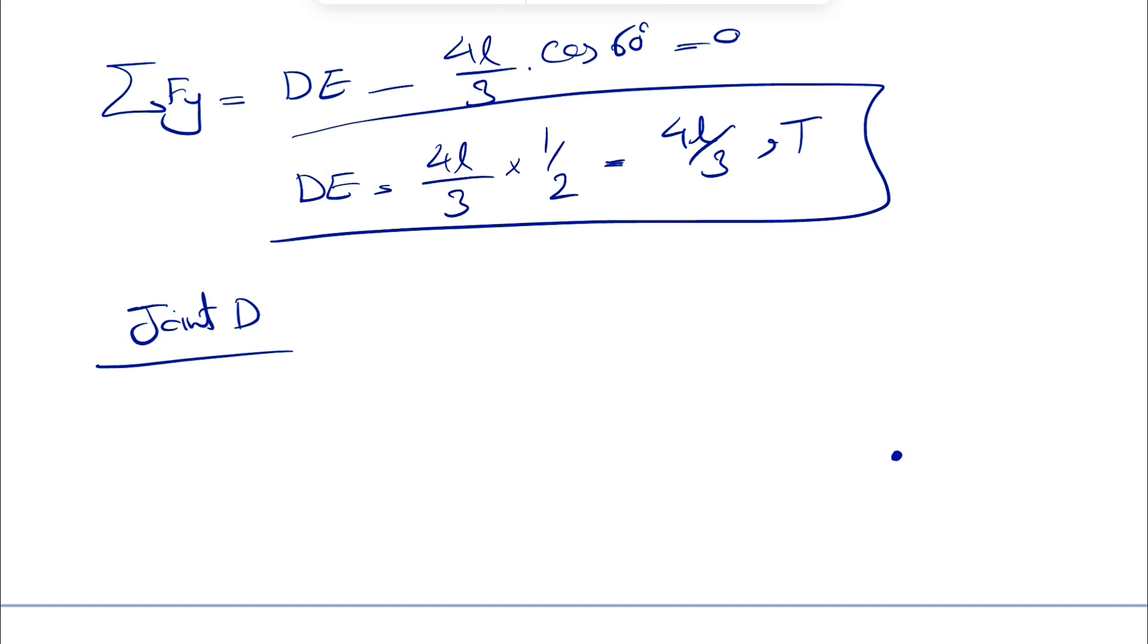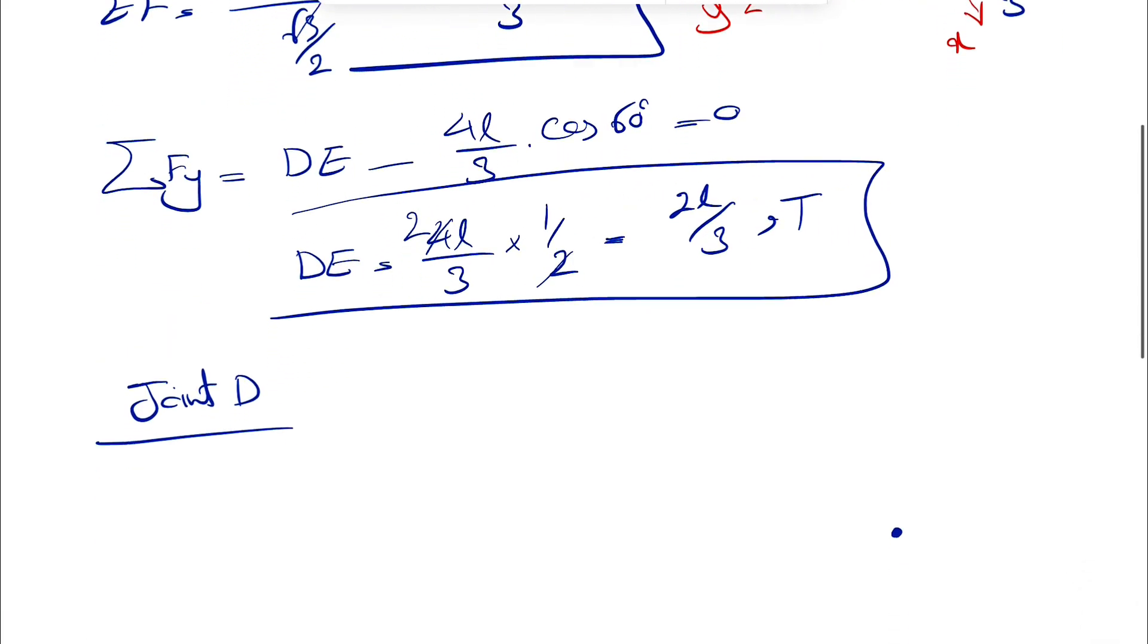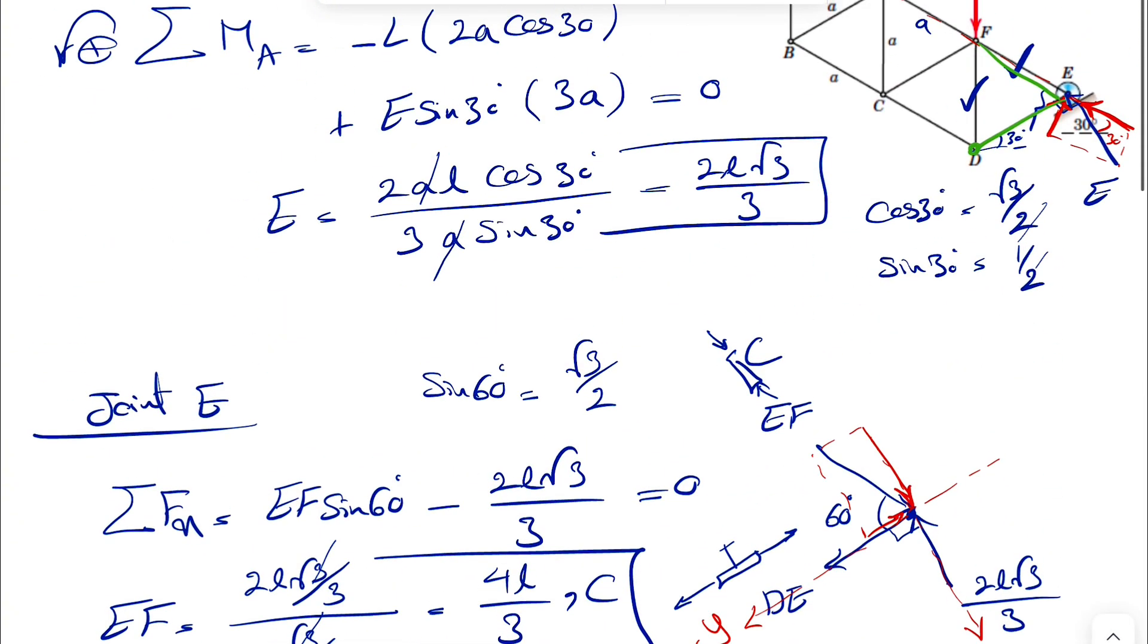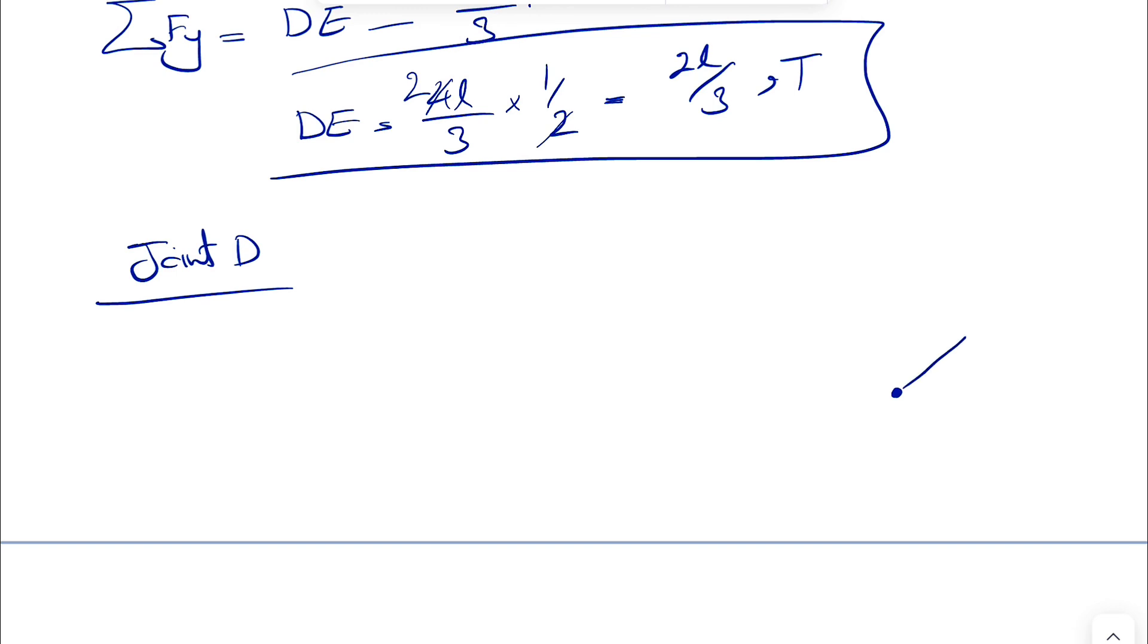All right, here I made a mistake. This is equal to two third of L. So now that was our member DE. And if we want to show that force, we have to watch for that because now that we are in joint D, we found that member DE is actually in tension. So the force on member D has to be in this direction. So that was our DE, which we found was two third of L.